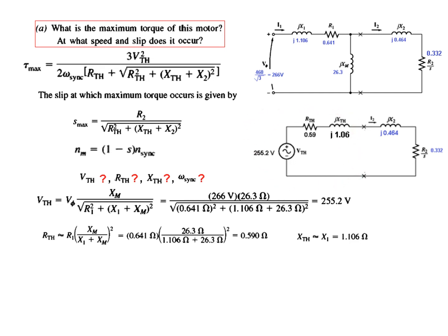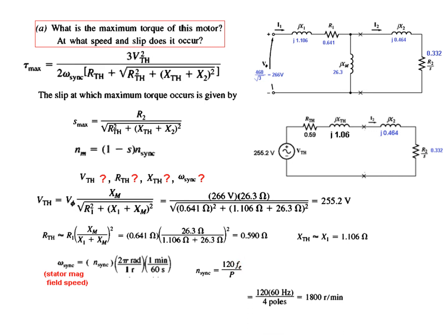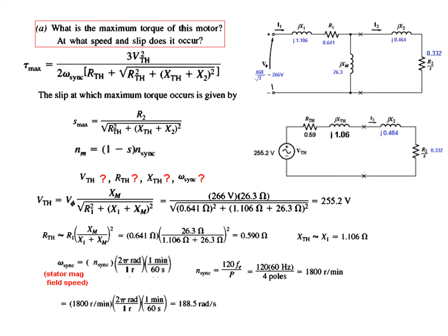This gives us the Thevenin equivalent circuit with V_Thevenin, R_Thevenin, and X_Thevenin, to which we connect the load portion. Finally, we need Omega_sync — the angular frequency in radians per second. NSYNC is found from the formula: 120 × frequency ÷ number of poles = 1800 RPM. Converting: Omega_sync = 1800 × (2π/60) = 188.5 radians per second.